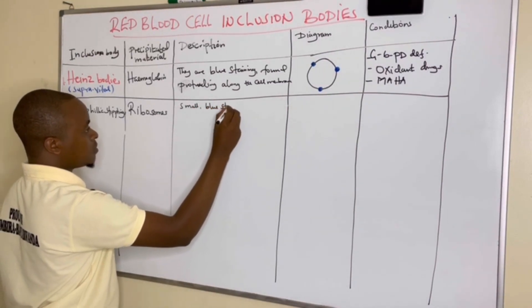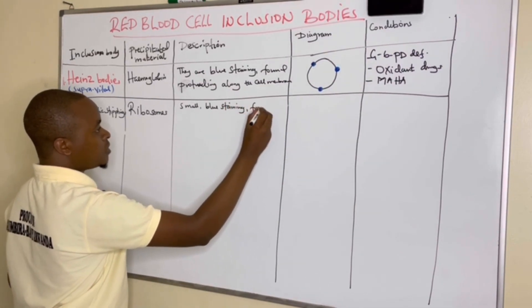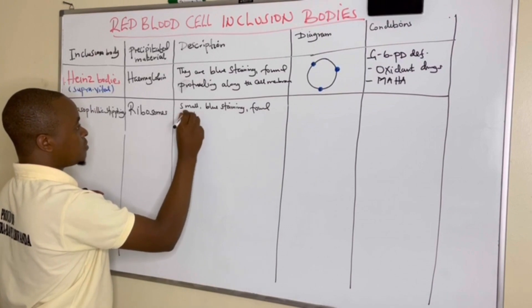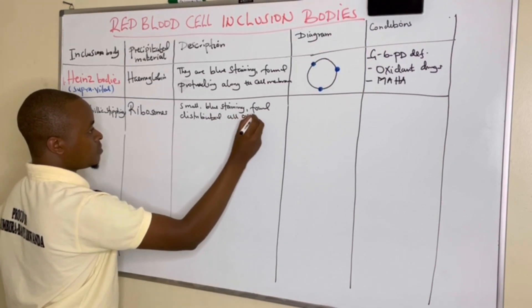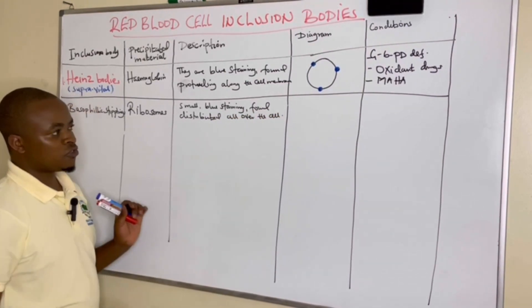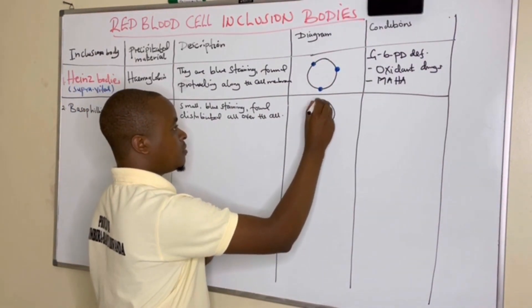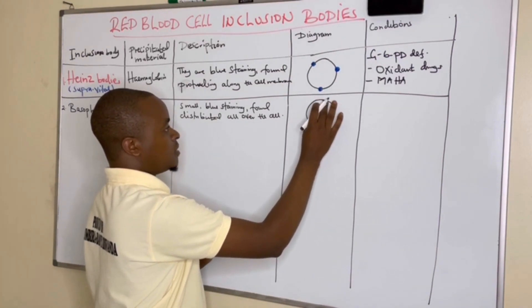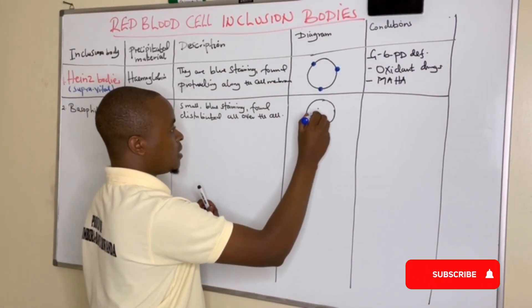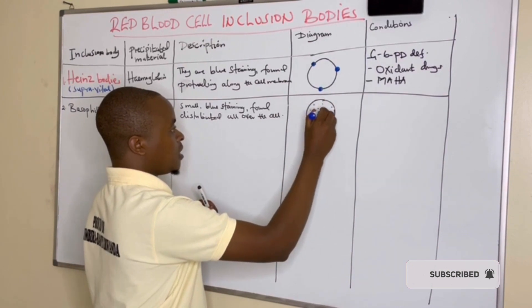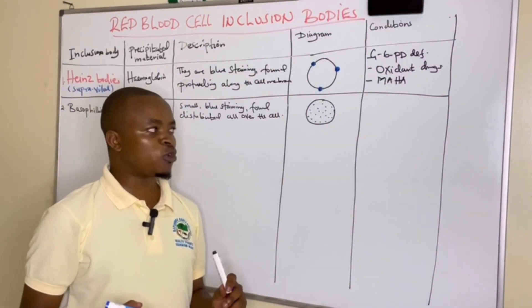Basophilic stippling bodies are small, blue staining, and distributed all over the cell. So if this is my red blood cell, we find these basophilic stipplings — small in size, blue staining, and distributed all over the cell — due to precipitated ribosomes within the cell cytoplasm.